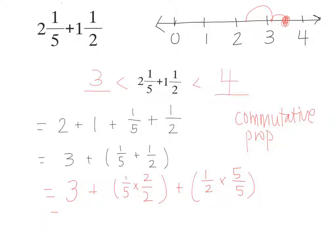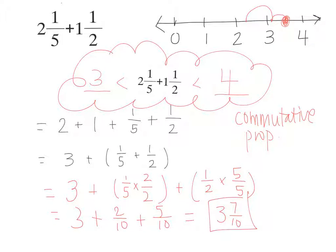And now our problem is 3 plus 2/10 plus 5/10. Now can we add? What's 2/10 plus 5/10? 7/10. And what's our whole number? 3. So the answer, the sum of 2 and 1/5 plus 1 and 1/2 is 3 and 7/10. Is that what we expected when we were deciding which two whole numbers it would be in between? Yes. 3 and 7/10 is in between the whole numbers 3 and 4. We can feel confident that our answer makes sense.